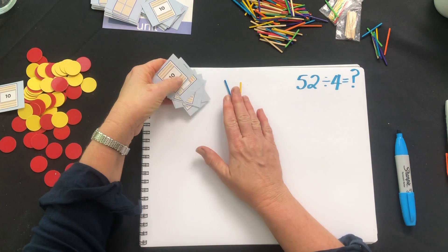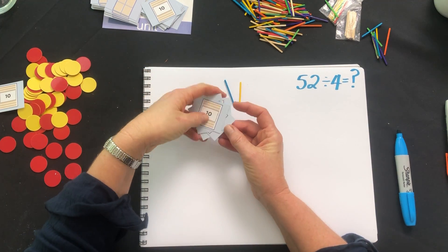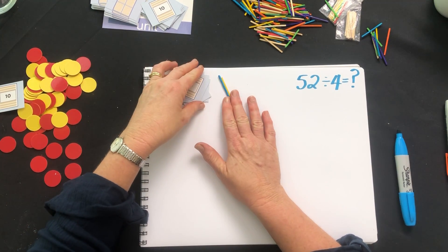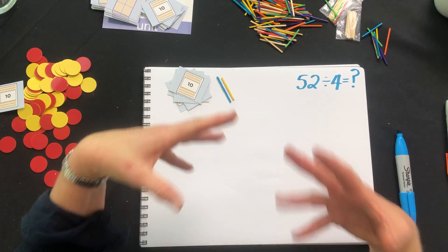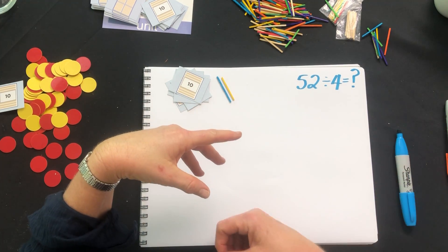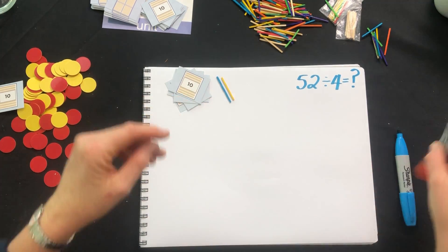So 52, I've got 52 here using my place value cards five tens and two ones and I'm dividing that into four groups, I'm sharing it into four equal parts.